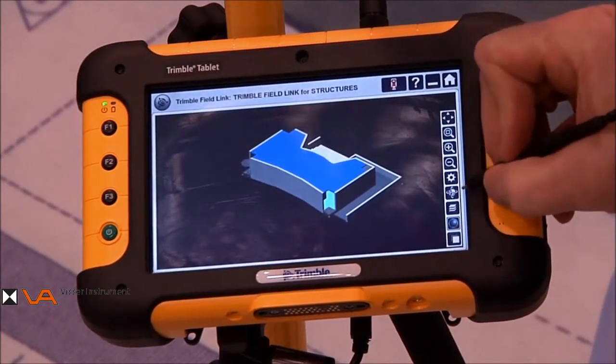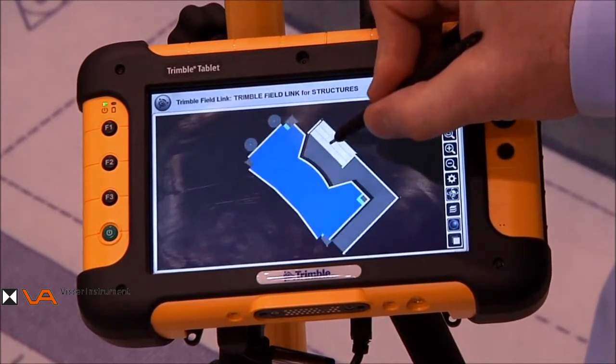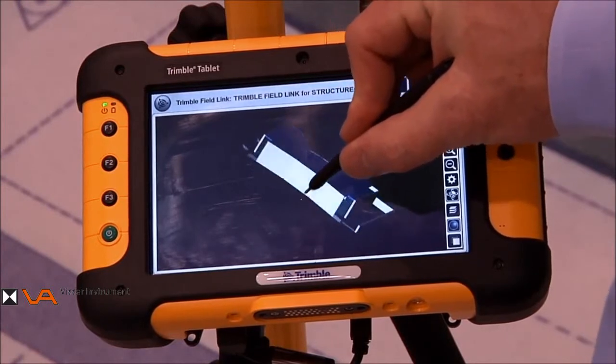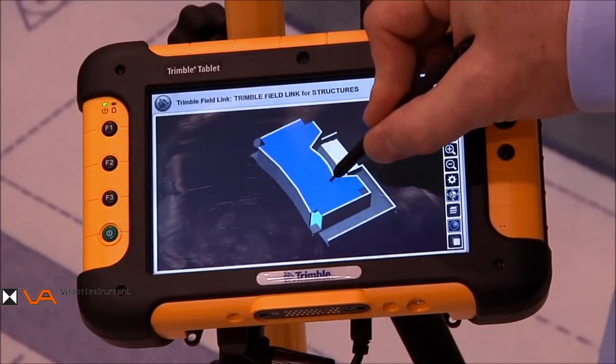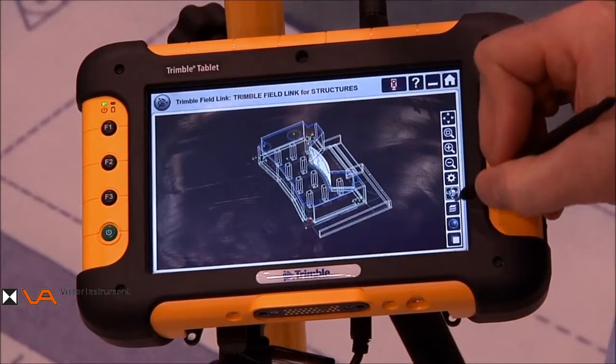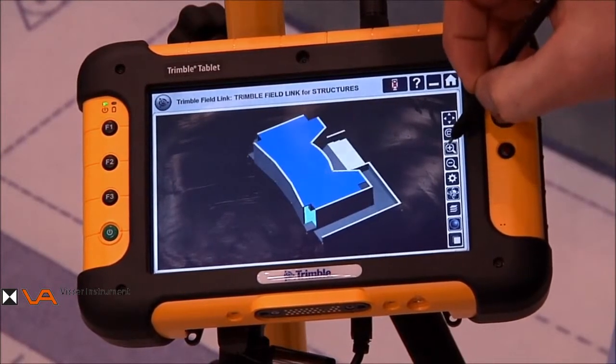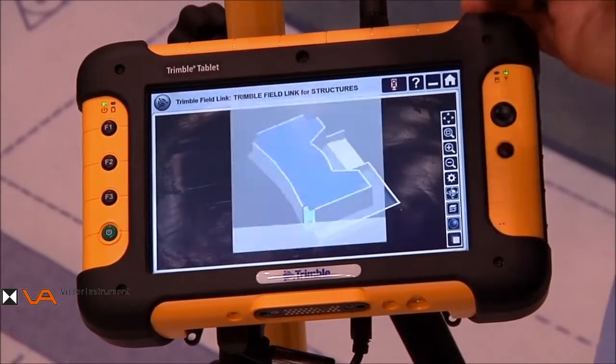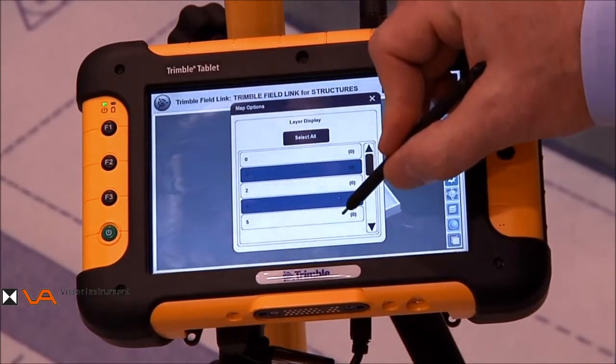We also have navigation controls that allow us to move and view this 3D model from different perspectives to see what we want to see in a different perspective. Again, we can go shaded to wireframe. We can also zoom in, zoom out, and we have layer controls that allow us to turn on or turn off different layers to see different portions of the project.